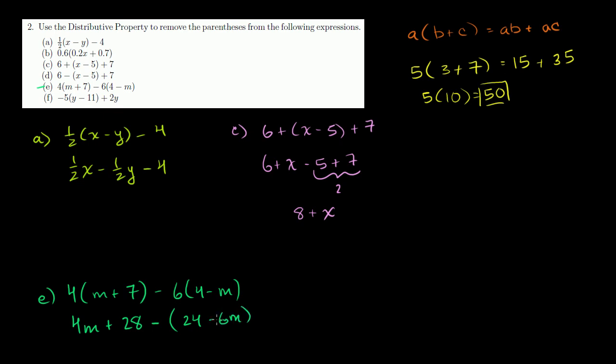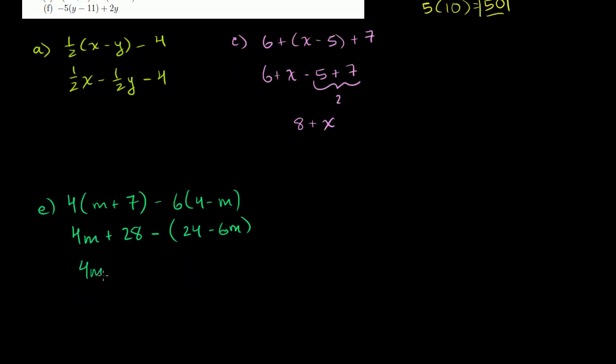And notice, I could have just said times negative 6 and have a plus here. But I'm doing it in two steps. So I'm doing the 6 first, and then I'll do the negative 1. And so this is going to be 4m plus 28. And then you distribute the negative sign. You could view this as a negative 1 times all of this. So negative 1 times 24 is minus 24. Negative 1 times minus 6m is plus 6m.